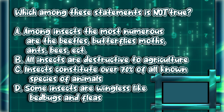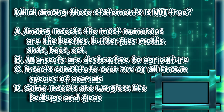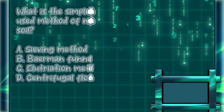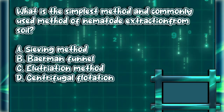Which among these statements is NOT true? A) Among insects, the most numerous are the beetles, butterflies, moths, ants, bees, etc. B) All insects are destructive to agriculture. C) Insects constitute over 70 percent of all known species of animals. D) Some insects are wingless, like bed bugs and fleas. The answer is letter B.